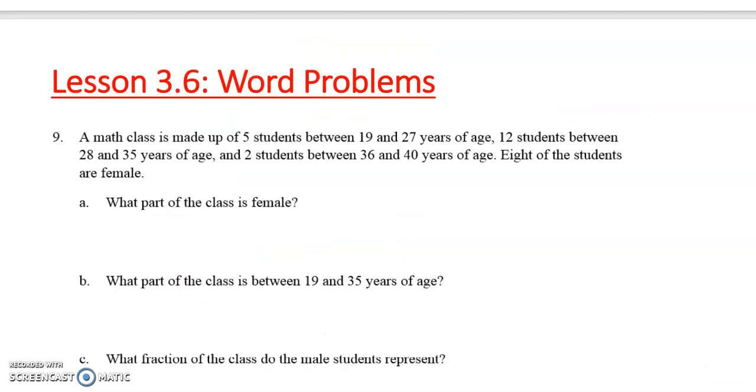Question number nine. A math class is made up of five students between ages 19 and 27, 12 students between 28 and 35 years of age, and two students between 36 and 40 years of age. Eight of the students are female. So there's a lot of information in that problem. So let's read what they want, and then we can pick out what we need. So A, what part of the class is female? Well, we know eight of the students are female. So the eight is going to go in our numerator.